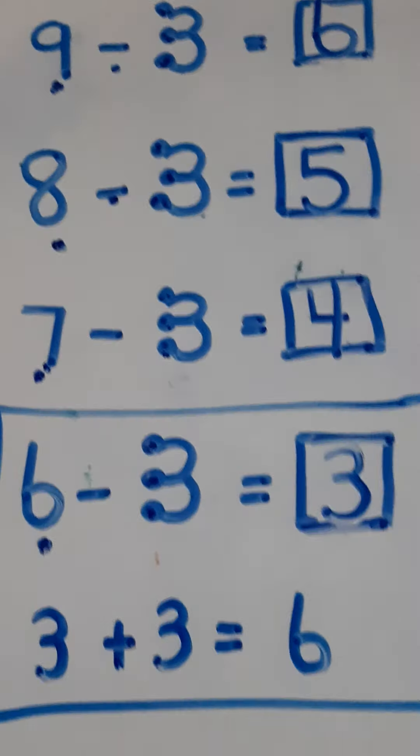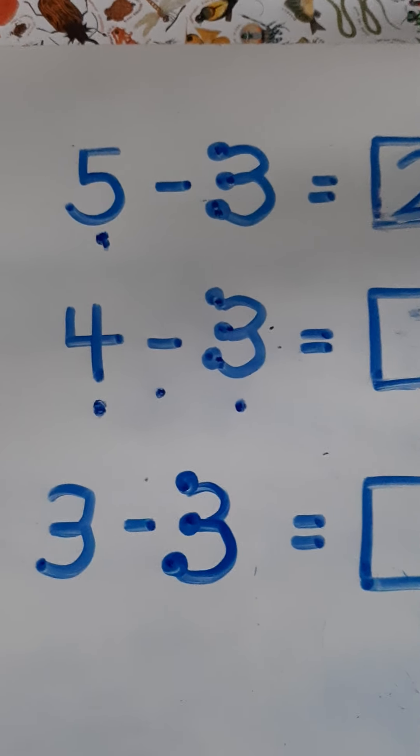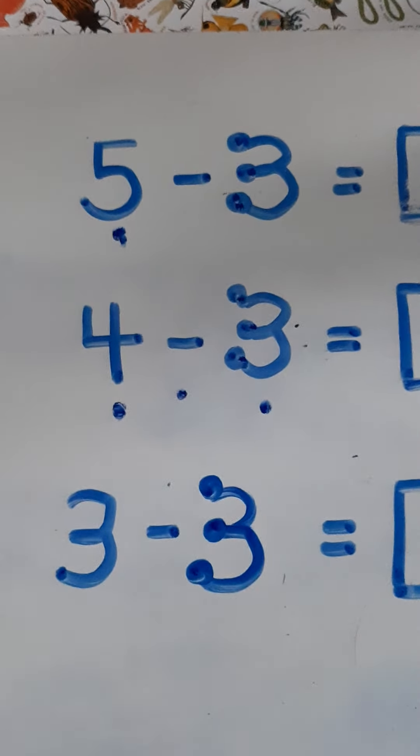Okay, let's try 5 take away 3. Tap 5 and count backwards on three: 5, 4, 3, 2. So 5 take away 3 equals 2. Maybe you have that one memorized already.